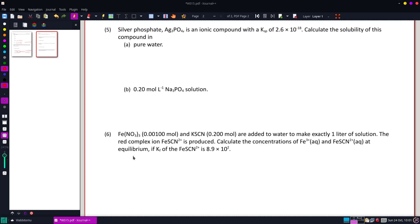Okay, on number six here, we're given iron nitrate and potassium thiocyanate, and we're going to add it to water and form the red complex iron thiocyanate.